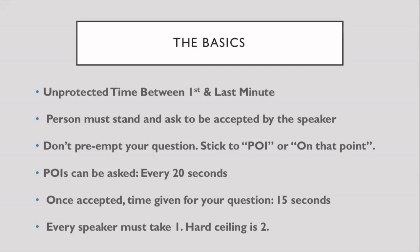To ask a POI, you must stand up in in-person tournaments. When you stand up, ask to be accepted by the speaker — do not preempt your question; merely say 'point' or 'POI' or 'point of information' and then wait to be accepted or rejected. You can ask a POI every 20 seconds, and this 20-second gap applies to the whole team. So if you ask a POI and got rejected, your whole team has to wait 20 seconds before someone can stand up again. Not waiting these 20 seconds is known as heckling or bragging and is considered an unfair interruption.